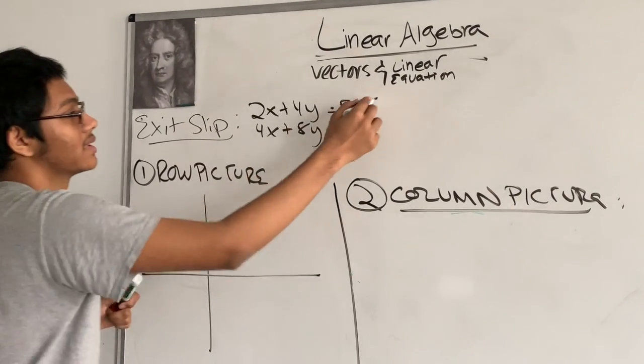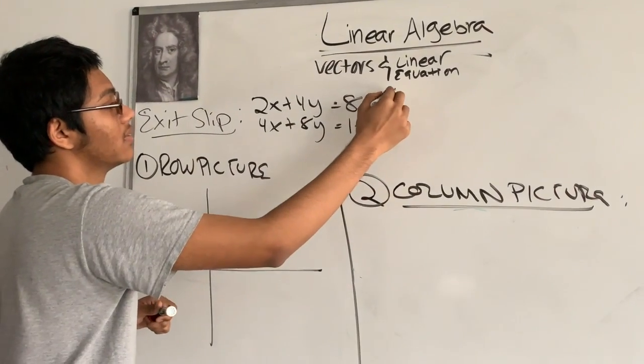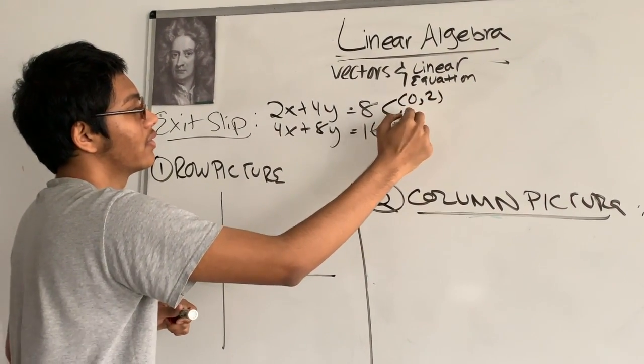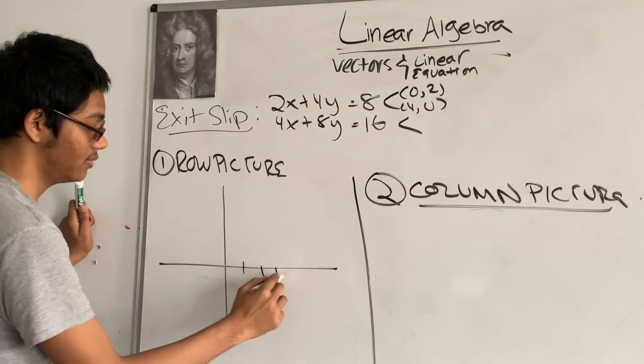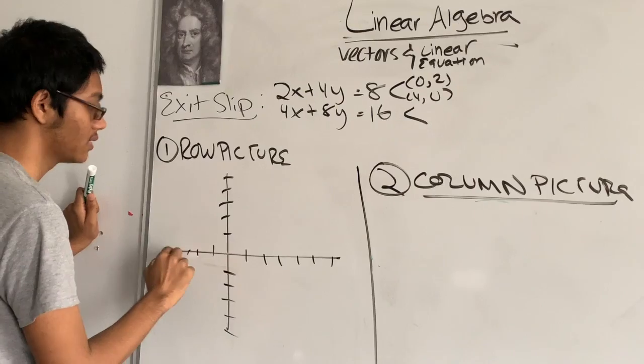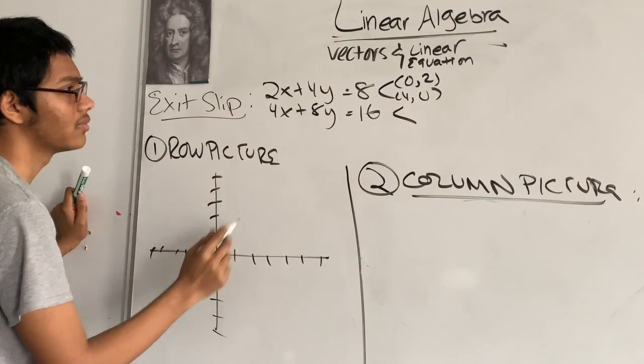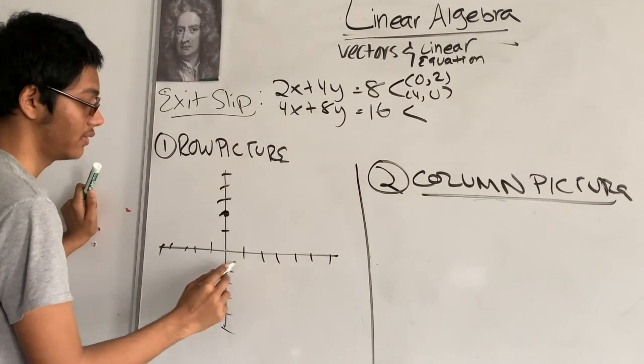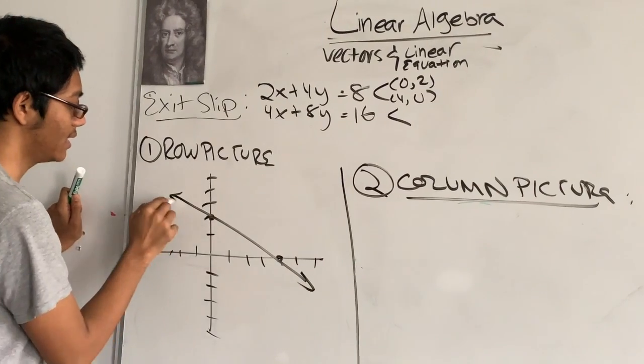What are the two points that satisfy this? 0, 2 and 4, 0. So 0, 2 is going to be x, y, 4, 0 is here. That's my first line.